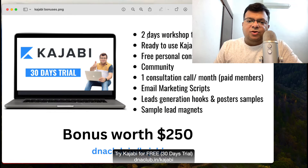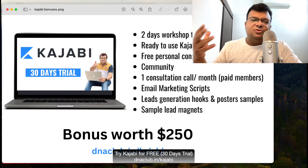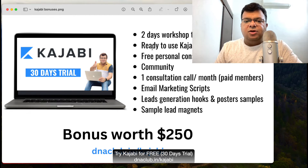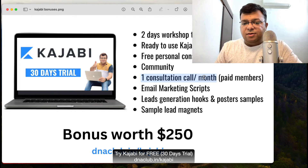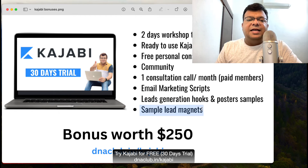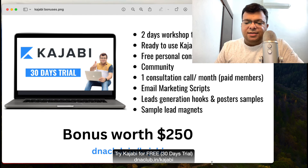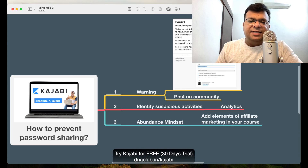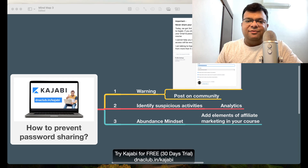With the 30-day trial through my link, I'm going to give you bonuses worth $250. You get a two-day workshop on MLM automation if you're into network marketing, ready-to-use Kajabi templates, a personal one-to-one meeting with me, community access, a monthly one-to-one call with me, email marketing scripts, lead generation materials, poster and hook samples, and sample lead magnets. This is amazing value just for using my affiliate link — dnaclub.in/kajabi, which is also in the video description.